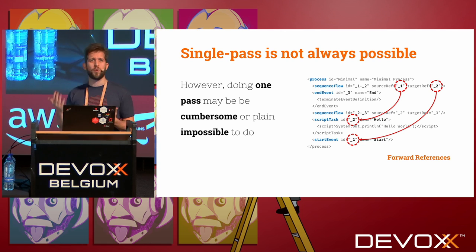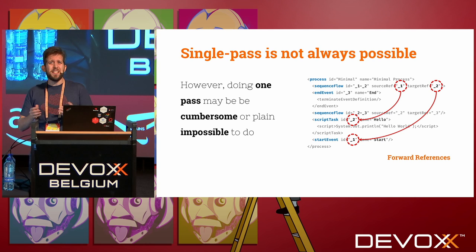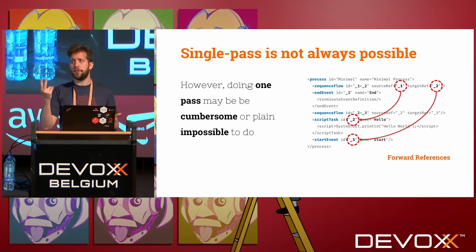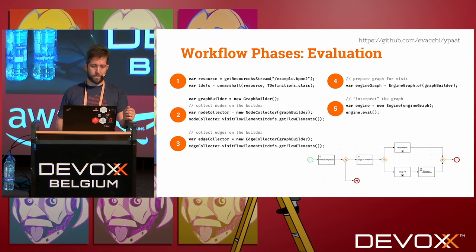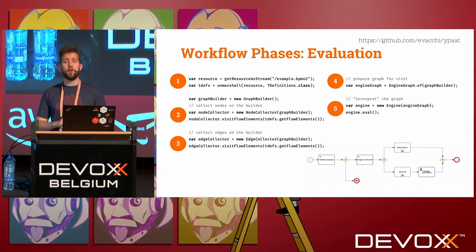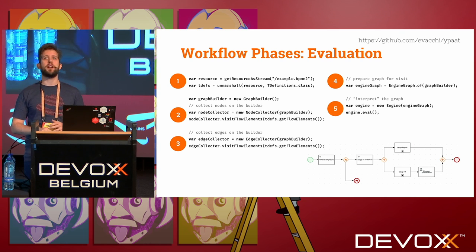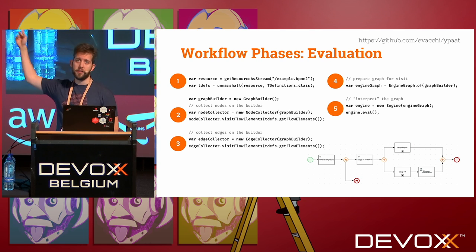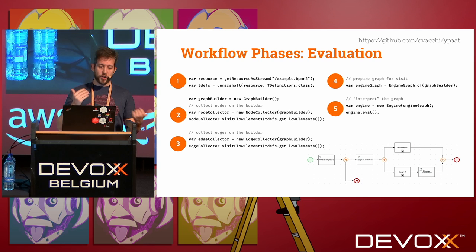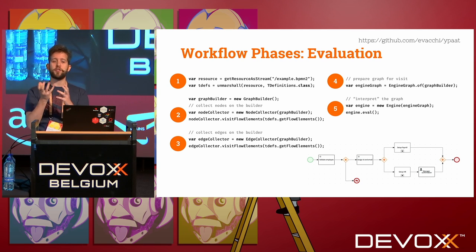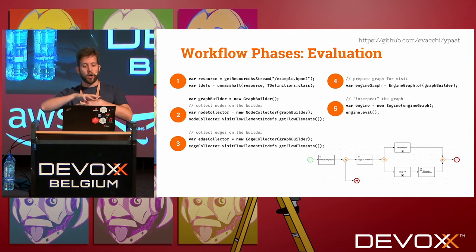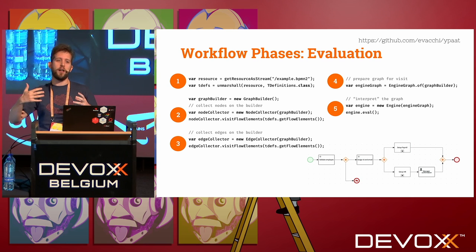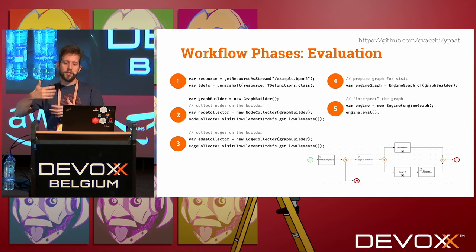In our case we have cross-references and forward references that cannot be resolved without doing several passes — at least two. To evaluate BPMN in compiler fashion: first read the file, un-marshall it, construct a graph structure, load all the nodes, load all the edges, then construct a visitable structure. It's a well-structured graph suitable for visiting.